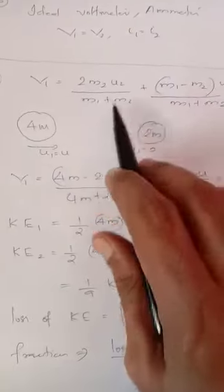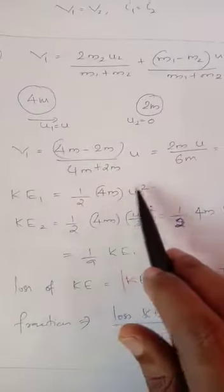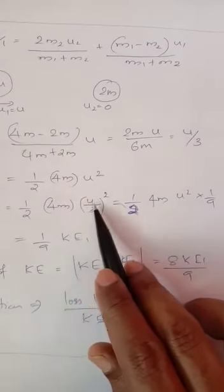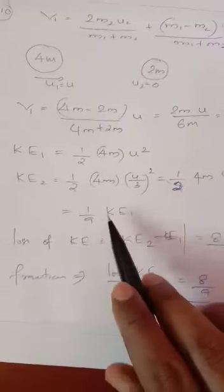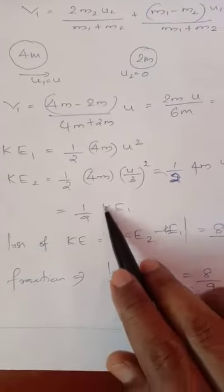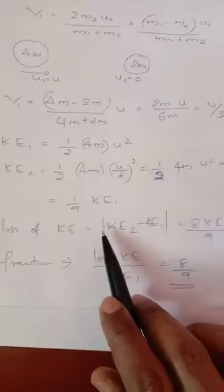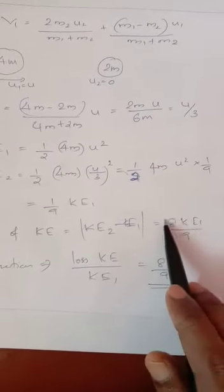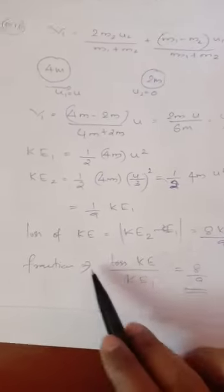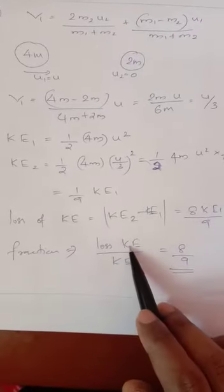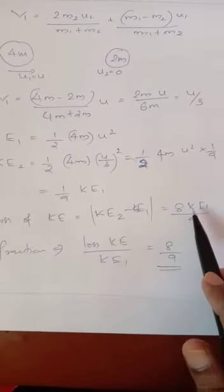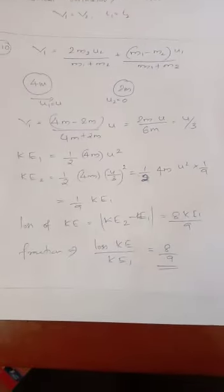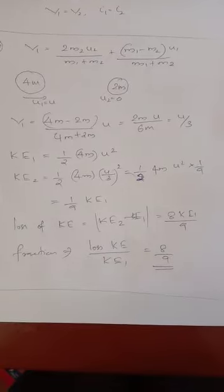Now using this result, the final velocity will be U by 3 for the first particle. The initial kinetic energy we can write - first particle after collision, its kinetic energy, V1 is U by 3. Therefore 1 by 9 times initial kinetic energy. Loss in kinetic energy is initial minus final. Therefore 8KE1 by 9. Fraction of energy lost is loss by initial value. The ratio is 8 by 9. The solution is 8 by 9 using 1-dimensional collision equations.